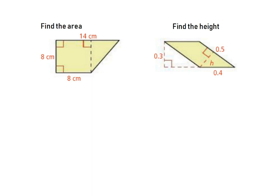Now a trickier one: this figure is a rectangle — actually a square — attached to a triangle. Find the area of the square and add it to the area of the triangle for the total. The square is 8 by 8, so its area is 64 square centimeters.